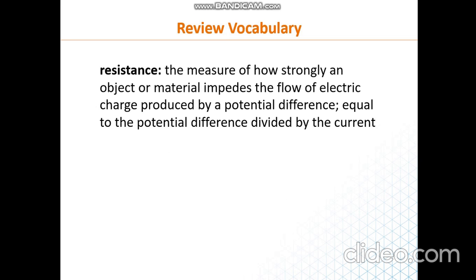Review vocabulary: we need to remember the definition of resistance. Resistance is the measure of how strongly an object, a device, or a material impedes the flow of electric current, or how hard it is for the current to flow in an element or a wire. According to Ohm's law, resistance R is equal to the potential difference delta V divided by the current. Ohm's law is very essential in studying electricity and circuits, so you will have to use it all the time.